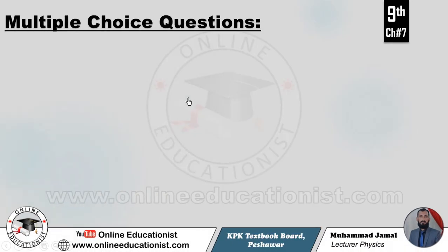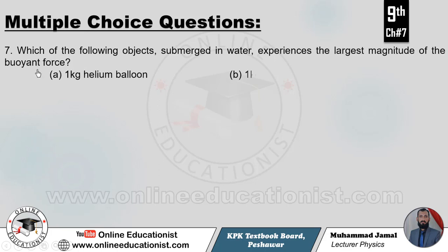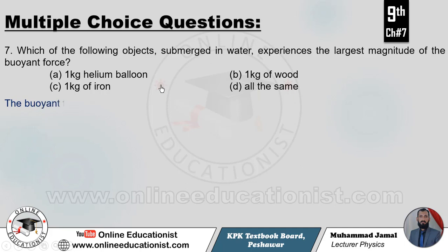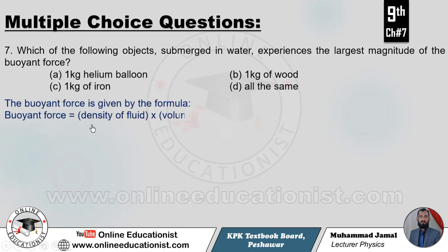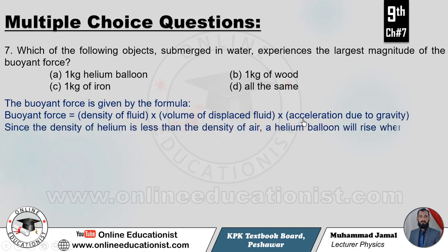MCQ number 7: Which of the following objects submerged in water experiences the largest magnitude of buoyant force? The buoyant force formula is F_b = ρVg — density, volume, and acceleration due to gravity. The density of water remains the same; what matters is the density and volume of the submerged object. For helium, wood, and iron, we compare their densities and volumes to determine which experiences the greatest buoyant force.